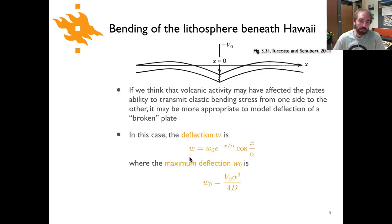In this case we can calculate a slightly simpler equation for the deflection. Again we have this w naught the maximum deflection times e to the minus x over alpha times the cosine of x over alpha. So that sine term is now gone that was there in the previous equation. Here our maximum deflection is similar v naught times alpha cubed over 4d. So that's similar to what we had before.